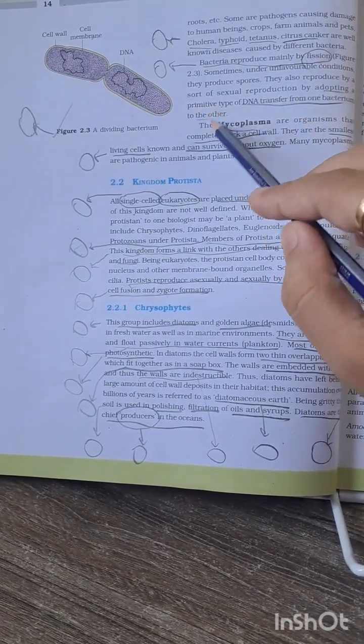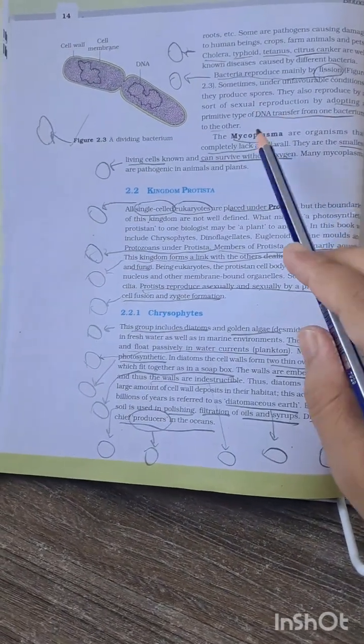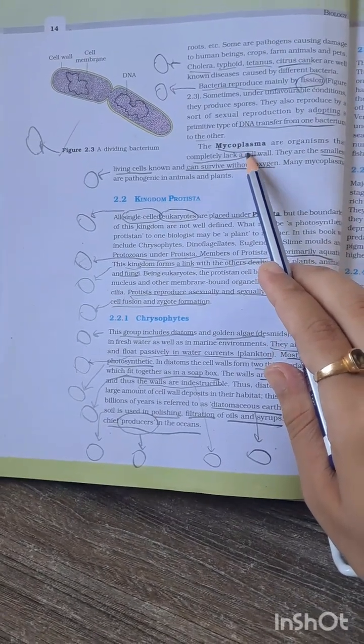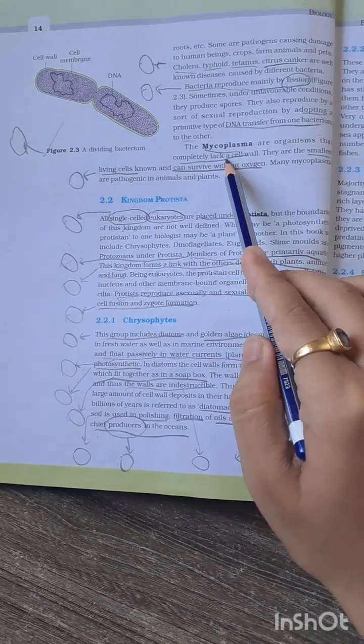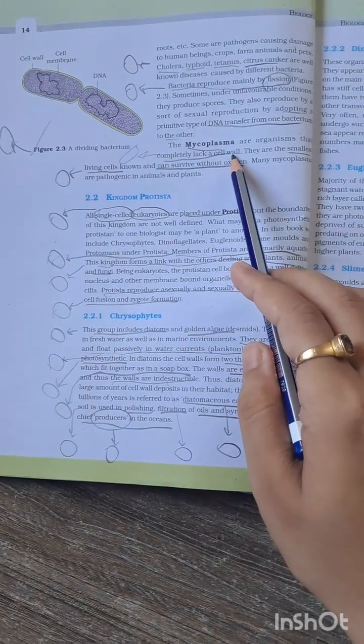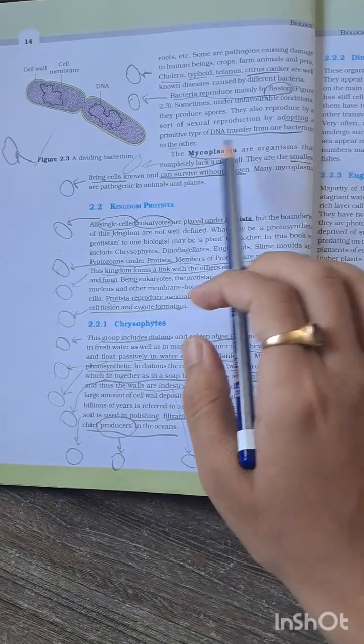Now, from Mycoplasma, many questions have been asked in previous NEET examinations. Mycoplasma are organisms that completely lack a cell wall. This is a probable and most important MCQ. They are the smallest living organisms known, and this question has been asked many times.